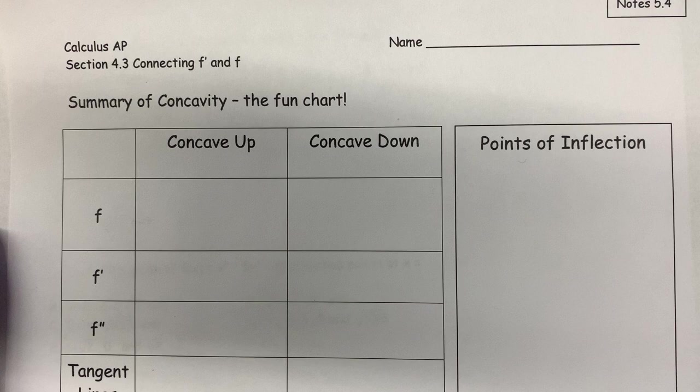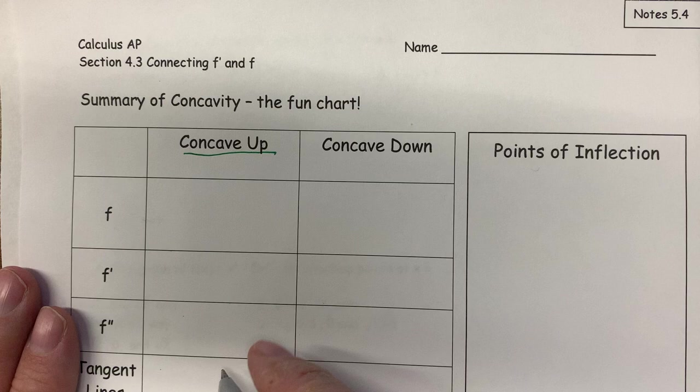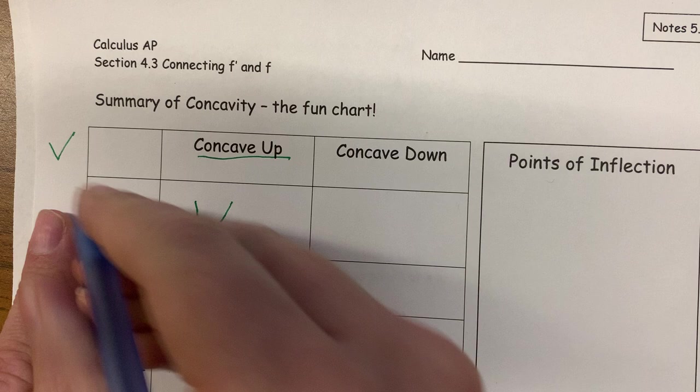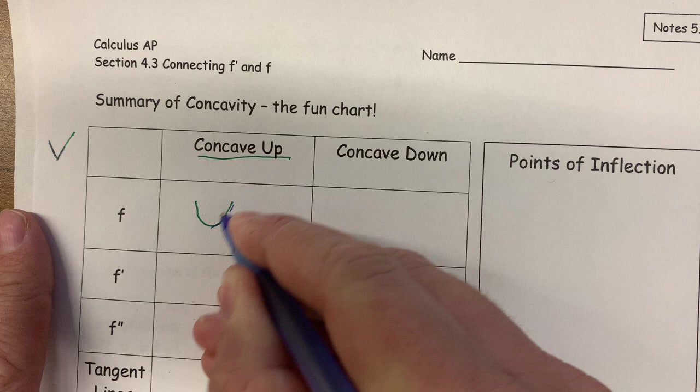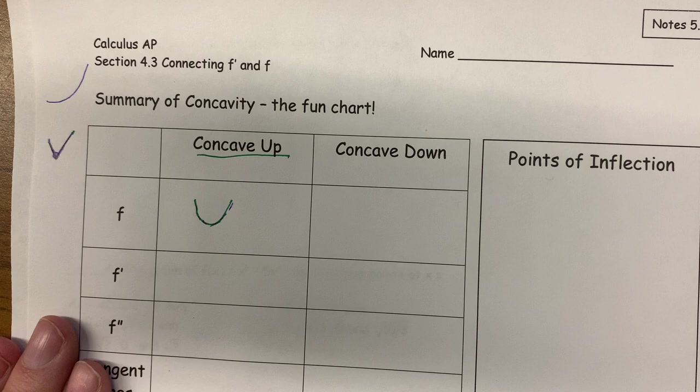Today we're going to be talking about the second derivative and how it affects a graph and a function. If a function is concave up, it means it is bending upwards. On the other hand, something like a cusp is not concave up — even though they both open upwards, there's no actual bending, whereas here you can see the slopes are getting higher and higher. This is also bending up, even though it's not a full parabola.